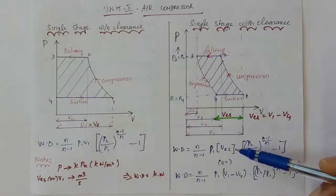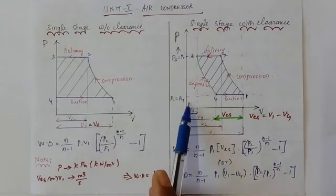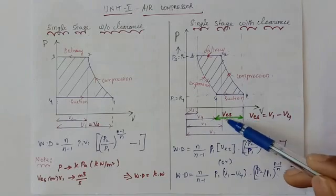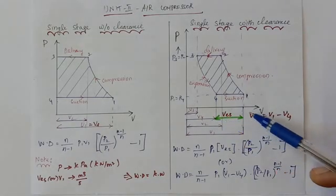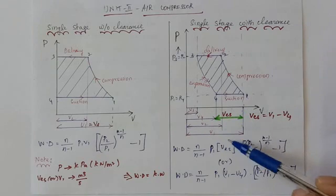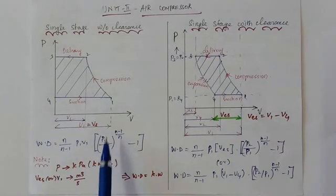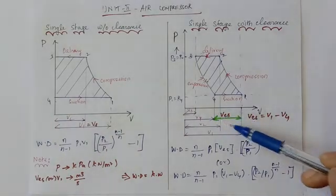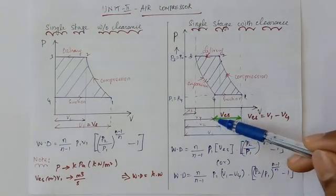V1 is also equal to stroke volume. In this case, clearance volume — the actual suction volume of air inside the cylinder — that's why we consider the volume. In this case, total V1 is the suction volume. But in the particular case with clearance, the actual suction volume is V1 minus V4. That's the remaining volume — that is the suction volume.